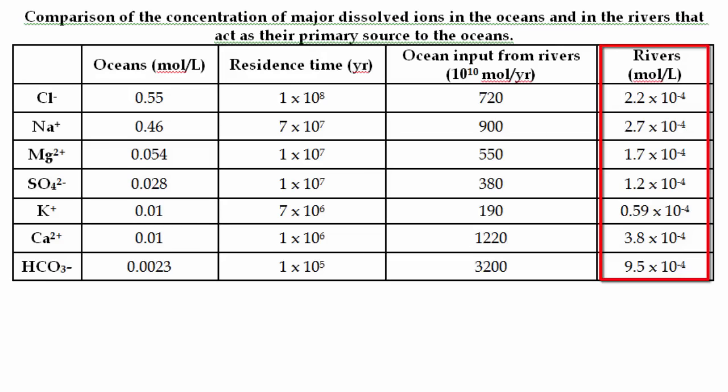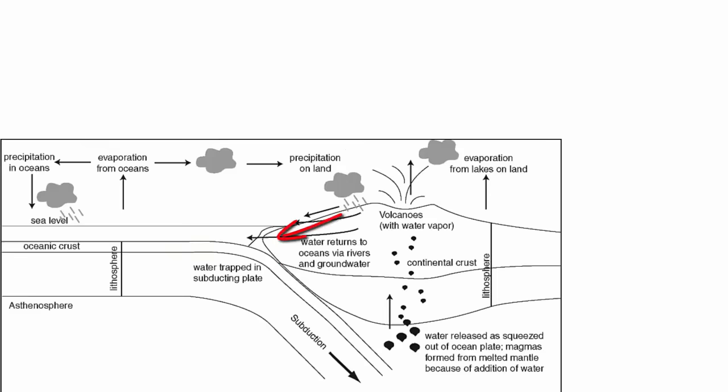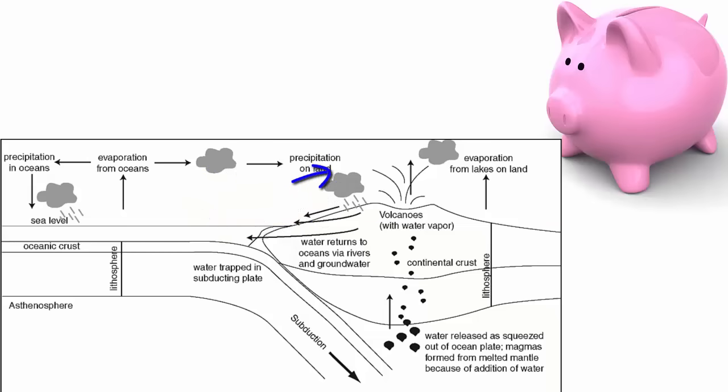Remember, the oceans have been around on this planet for 4.4 billion years. During that time, the rivers have carried small amounts of ions to the oceans, then the water has evaporated, gone back to the land, and picked up a few more. It's like adding pennies to a bank.